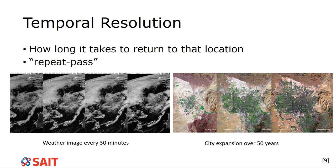Temporal resolution is also known as repeat pass. When doing your assignment, look for repeat pass — this means the satellite goes back to the exact same location. The orbit time is not your temporal resolution. If it's a 12-hour orbit, that 12 hours is not your temporal resolution. Your temporal resolution is the repeat pass — when it actually gets back to that exact same location and looks at it in the same way. There's a big difference between repeat pass and orbit time.